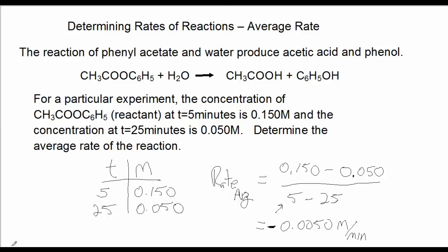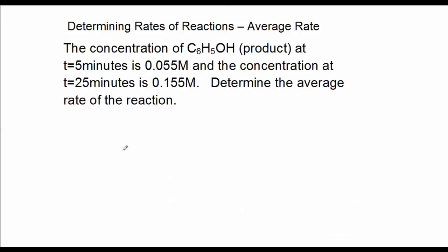Let's try one more. This problem reads, the concentration of C6H5OH, the product, at T equals 5 minutes is 0.055 molar, and the concentration at T equals 25 minutes is 0.155 molar. Determine the average rate of the reaction. Give it a shot. Pause the video. Come back and check your answer.